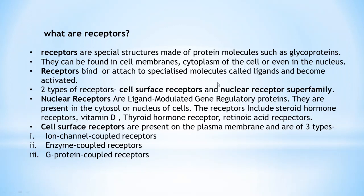There are two types of receptors: cell surface receptors and the nuclear receptor superfamily. Nuclear receptors are ligand-modulated gene regulatory proteins with two binding domains — a ligand binding domain and a DNA binding domain. Their ligands are small and lipophilic or hydrophobic so they can pass through the plasma membrane. These include steroid hormone receptors, vitamin D receptors, thyroid hormone receptors, and retinoic acid receptors. Cell surface receptors, on the other hand, are present in the plasma membrane, and their ligands are hydrophilic and cannot cross the plasma membrane.